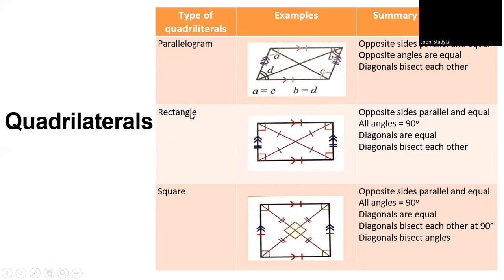A rectangle has opposite sides that are parallel and equal (marked with arrows), all angles equal to 90 degrees, equal diagonals, and diagonals that bisect each other.